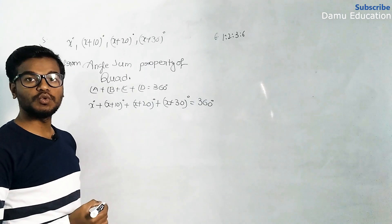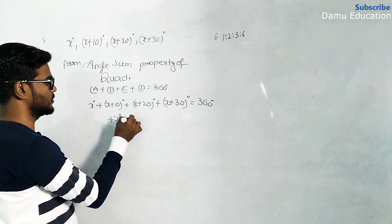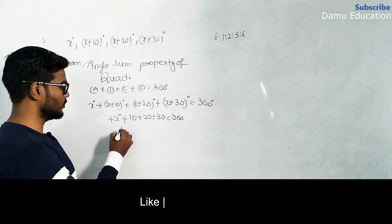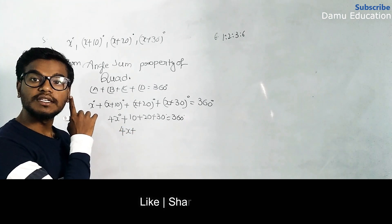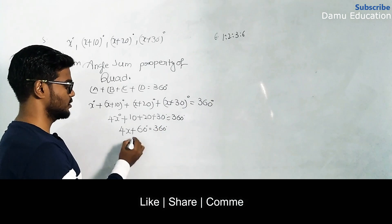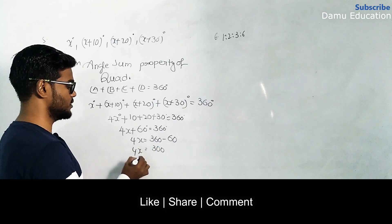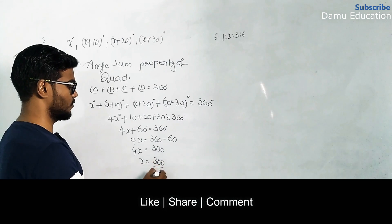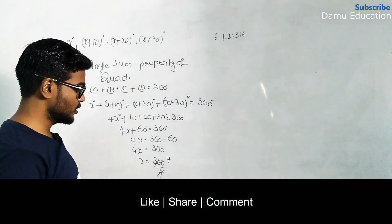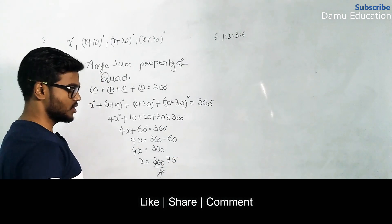There are four x terms, so we get 4x plus 10 plus 20 plus 30 equals 360 degrees. Adding the constants: 10 plus 20 plus 30 equals 60, so 4x plus 60 equals 360. Therefore, 4x equals 300, and x equals 300 divided by 4, which gives x equals 75 degrees.